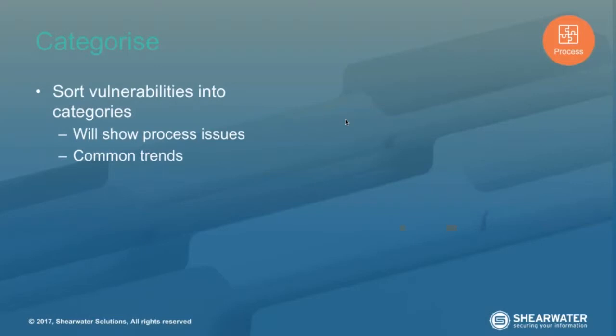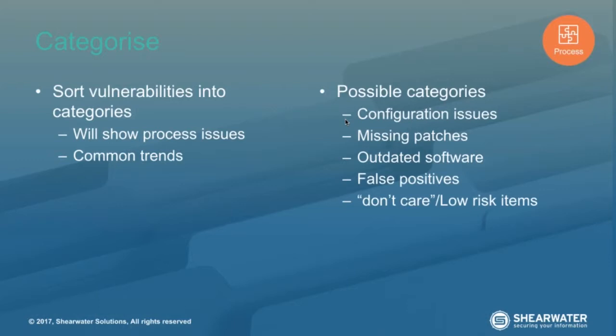When we categorise things, we sort the vulnerabilities into different categories. The reason we break them down into categories like configuration issues or missing patches is that if the majority of issues we identify are because of missing patches, we know that your patching process probably needs a review, because you're not applying patches in a timely manner - therefore there's a problem there.